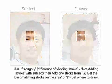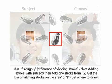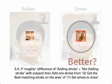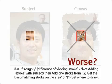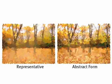A. If the difference of adding a stroke is less than the difference of not adding a stroke with the subject, then add one stroke from the best matching stroke on the area, offset where to draw. The artificially generated error helps to determine a style of painting, including abstractive painting, representational painting, and impressionism.